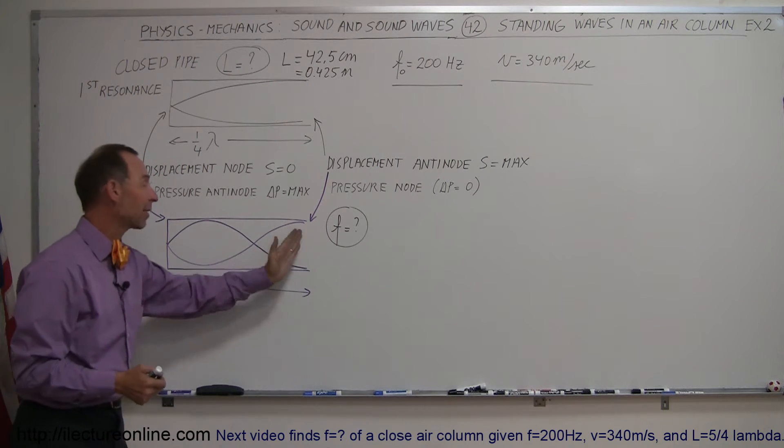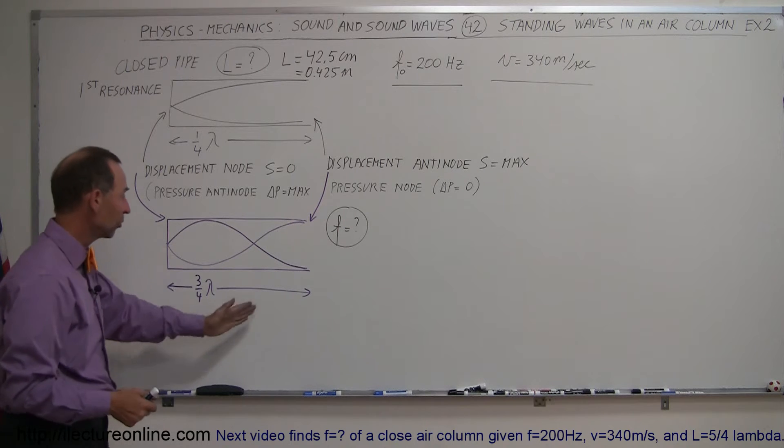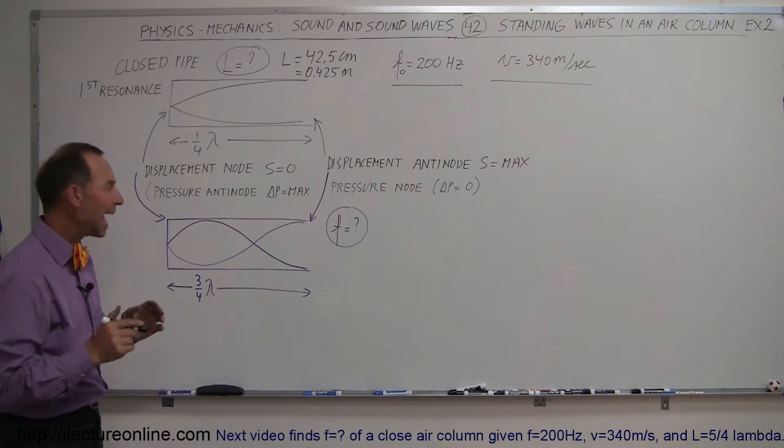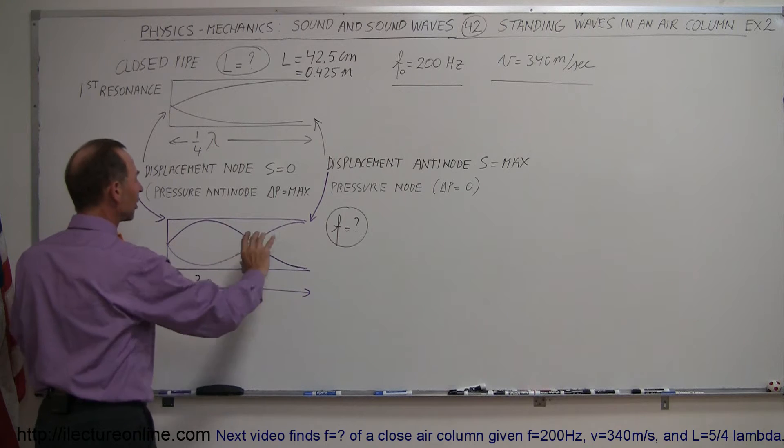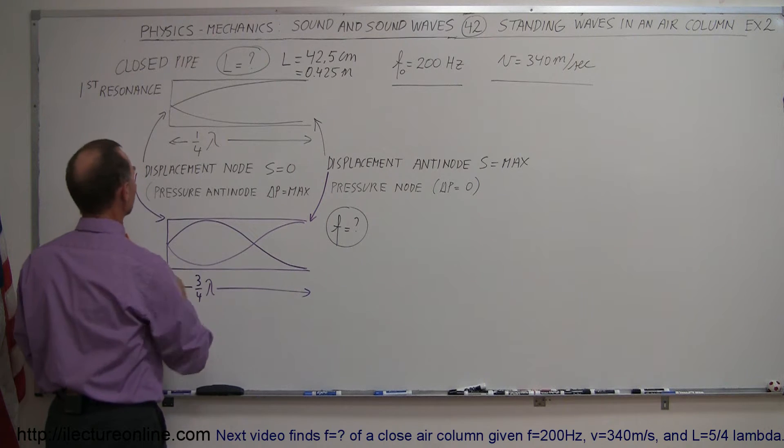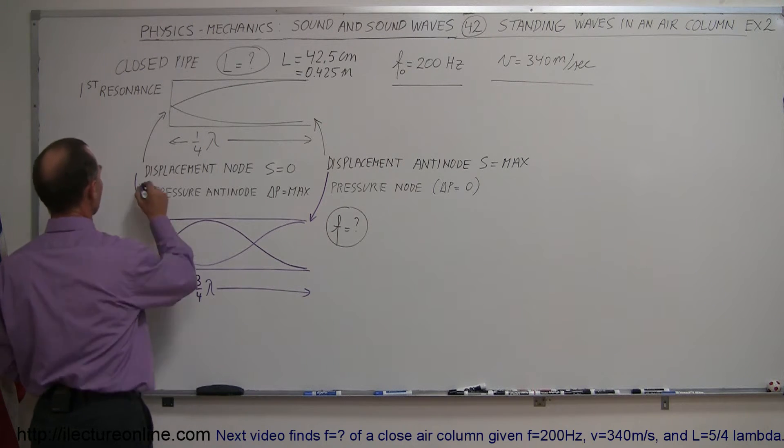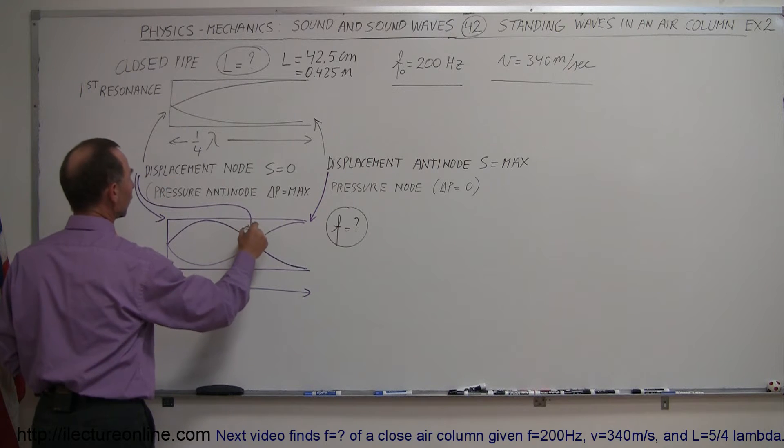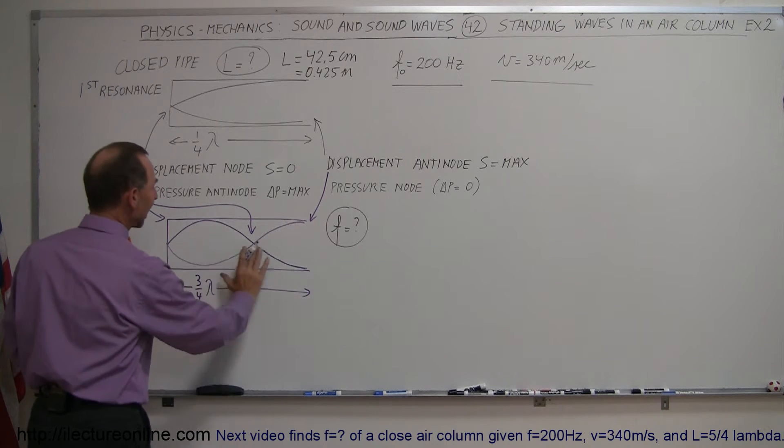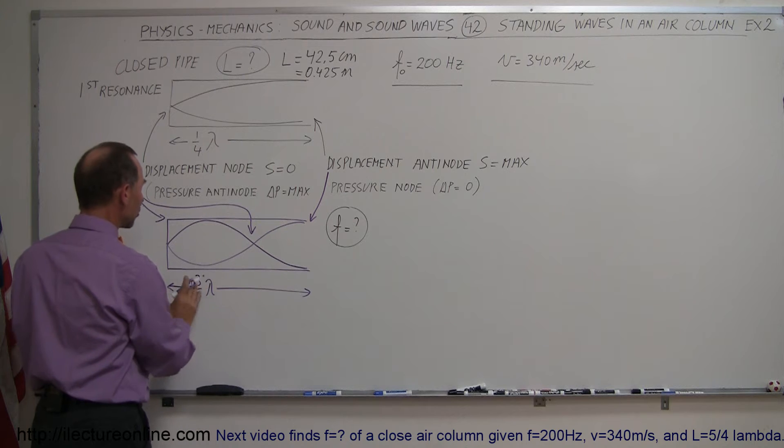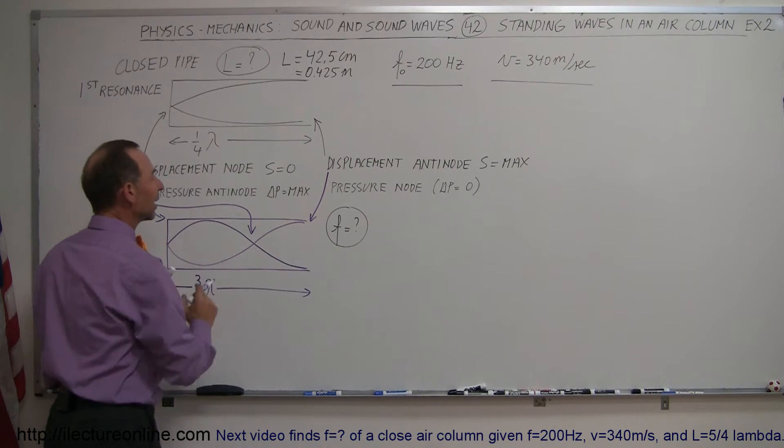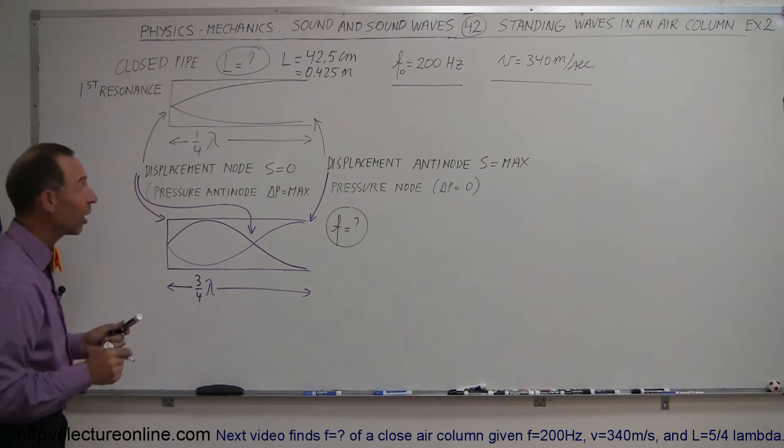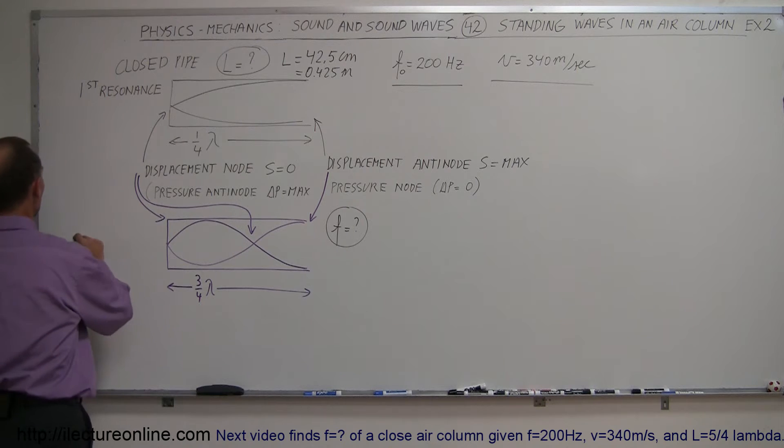Zero displacement, maximum displacement, maximum pressure, zero pressure. And that can happen when we have a situation like this where there's another node, this place of the node over here, in such a way that we have a wavelength where three-quarters of the wavelength is equal to the length of the pipe. Now we have ourselves another resonance frequency and we call that the second resonance.